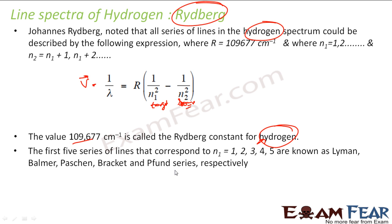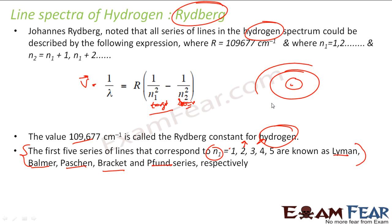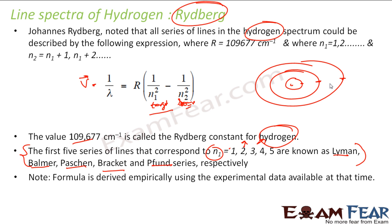The first five series correspond to n₁ = 1, 2, 3, 4, and 5. For n₁ = 2 we have Balmer. For n₁ = 1 it is Lyman. For n₁ = 3 it is Paschen. For n₁ = 4 it is Brackett, and for n₁ = 5 it is Pfund — these names come from the people who discovered each series. Again, please note this is all derived from experimental data.